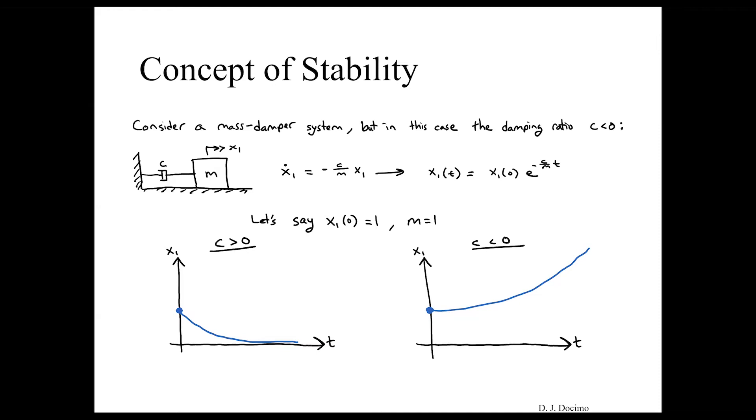Which doesn't make physical sense in this case, causing our velocity stability to exponentially increase. So these two, they're an example of a stable system versus an unstable system.